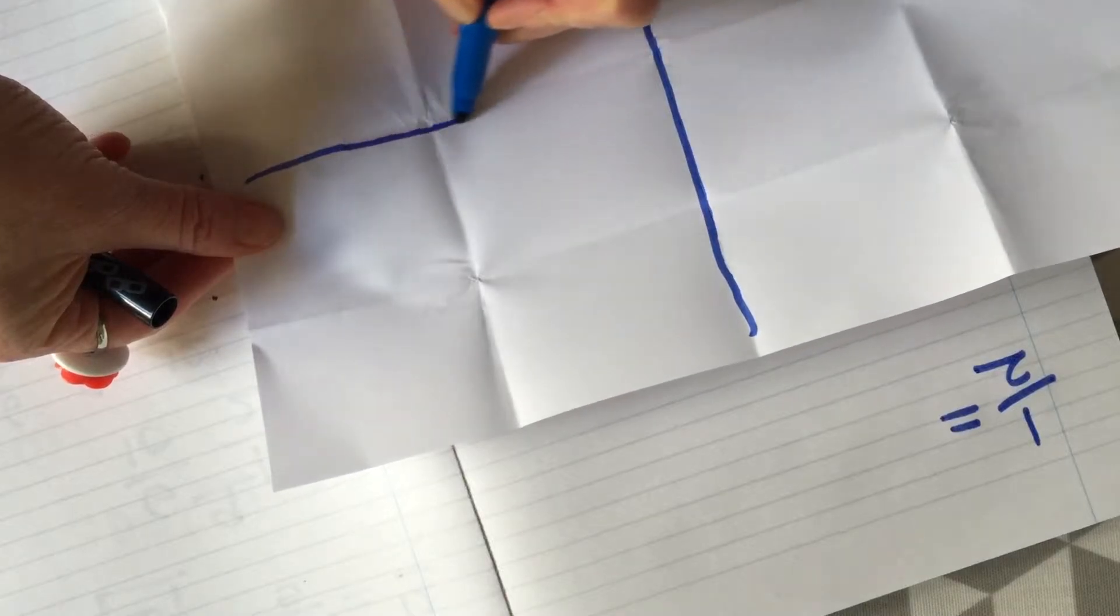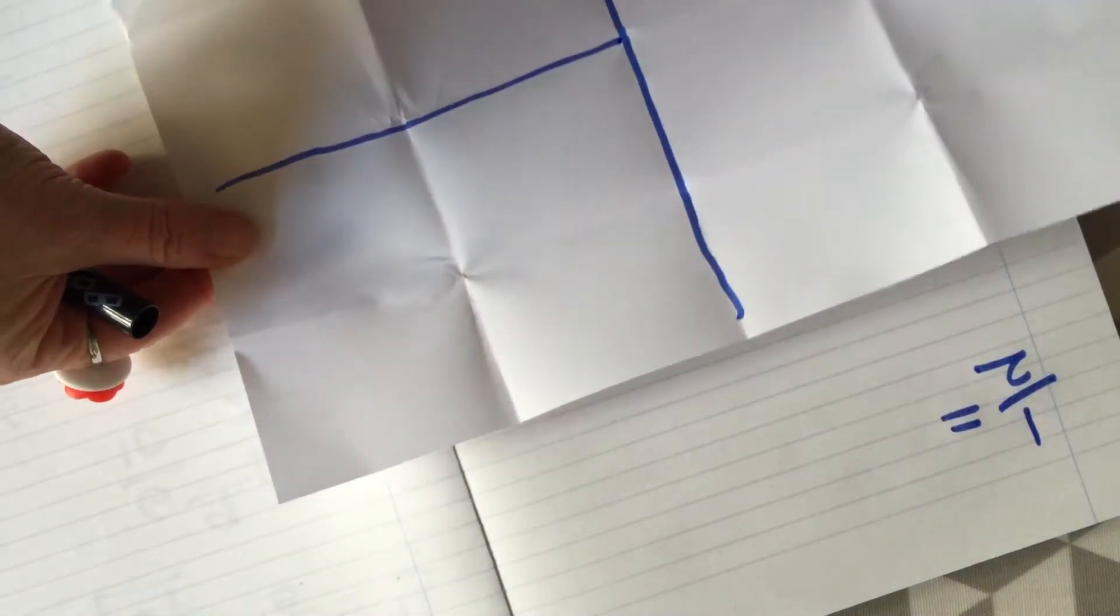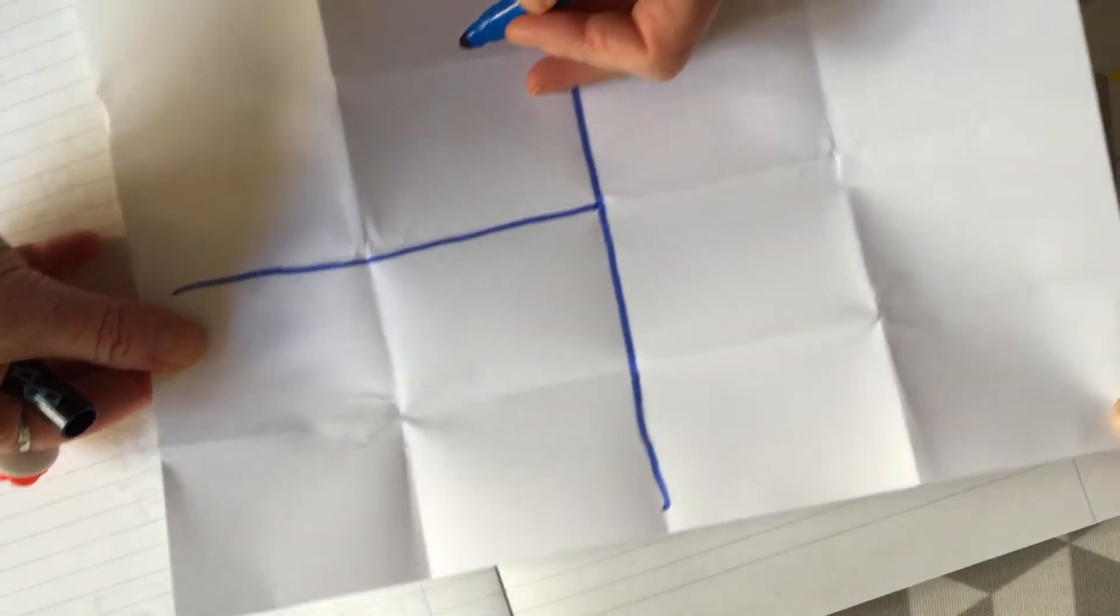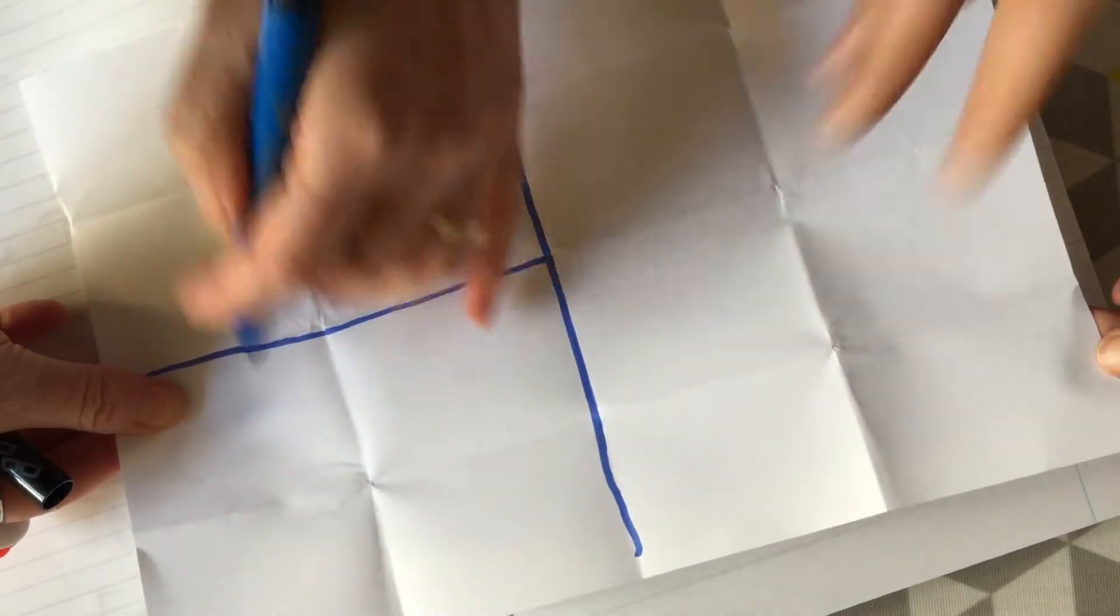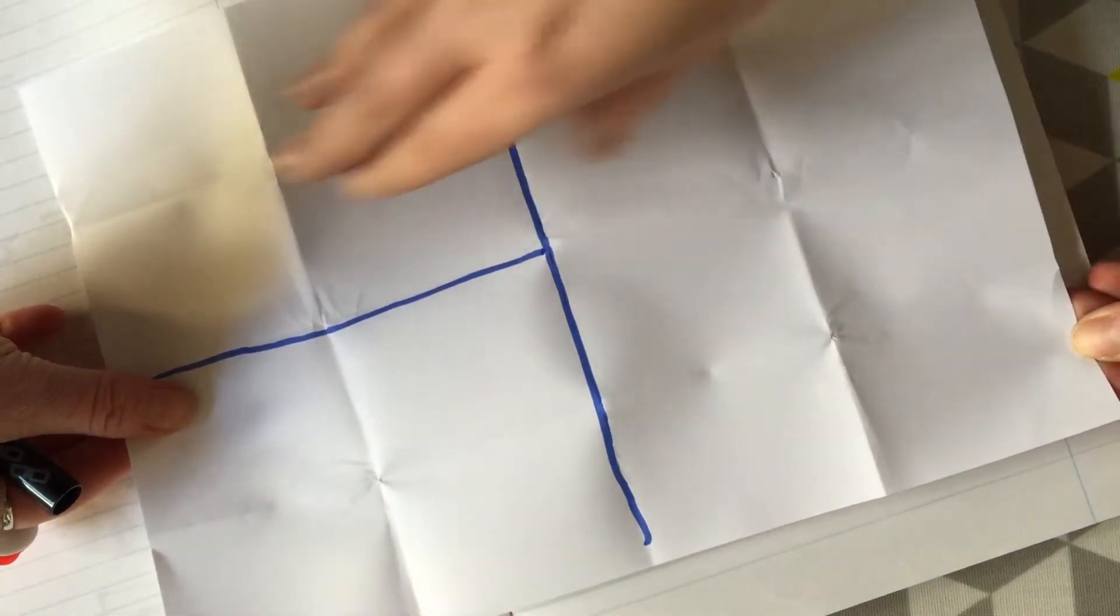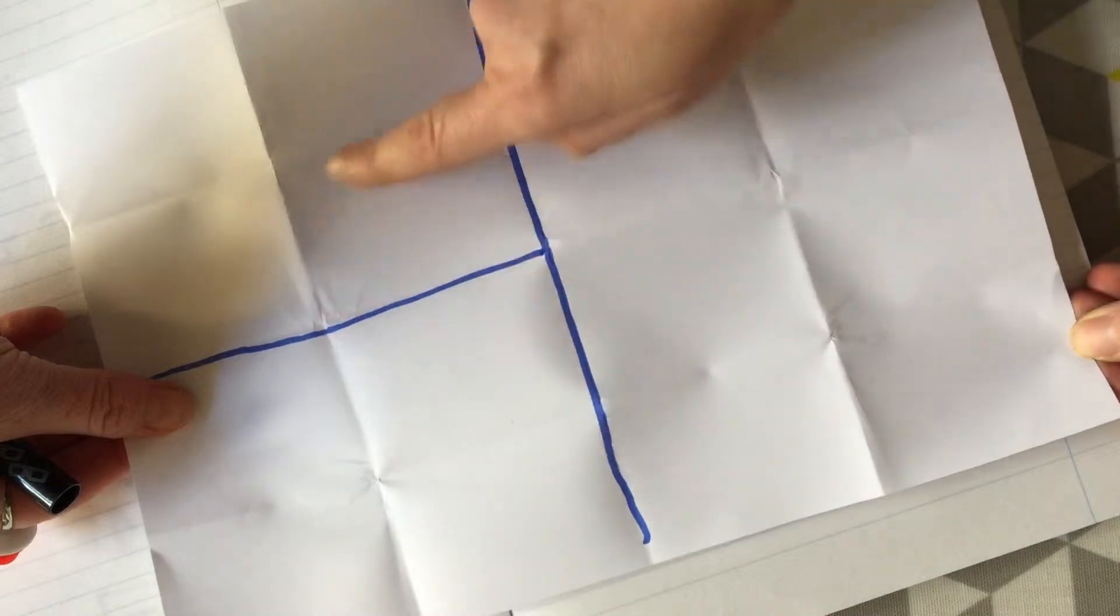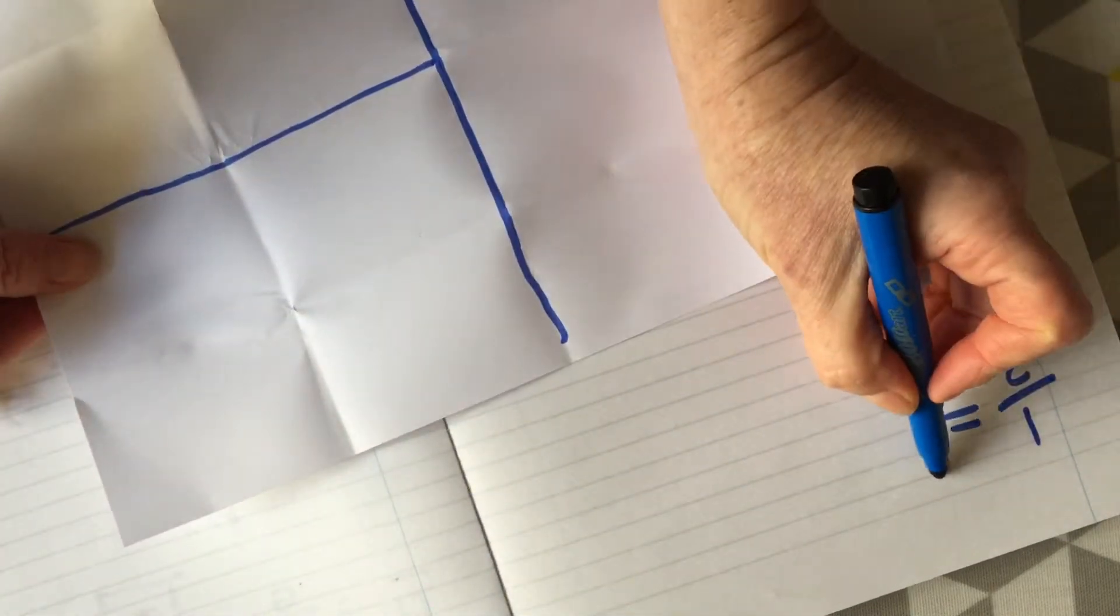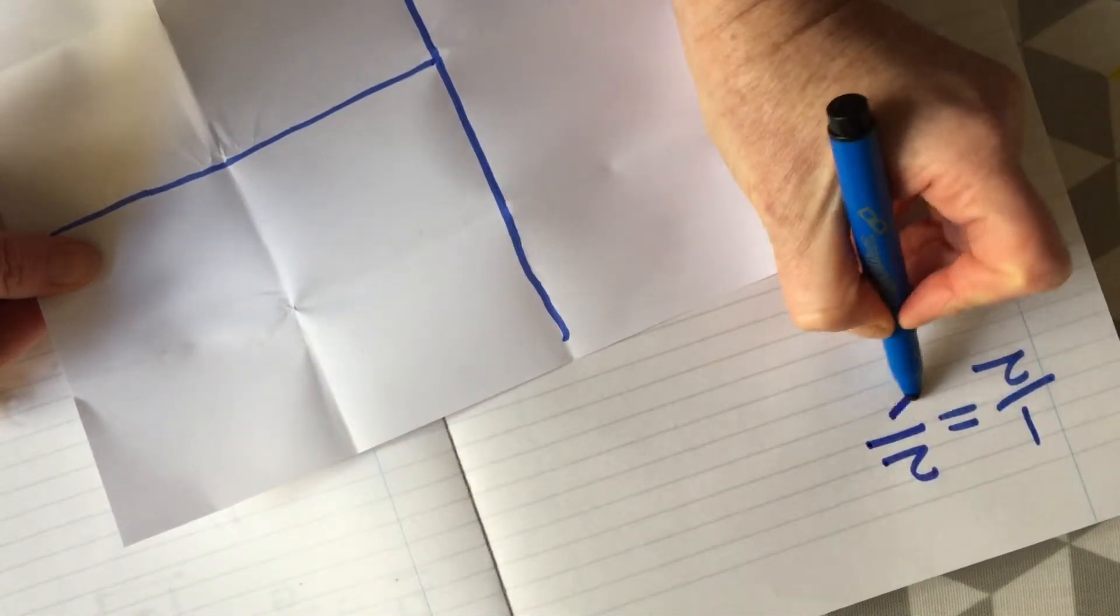What does a half equal? Well if you look at this half, you take the line across from this, this becomes two: one, two, three, four. So two quarters.